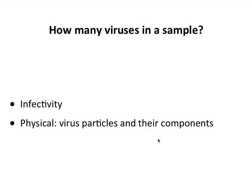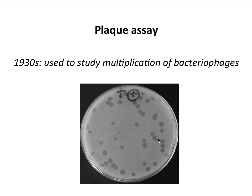Starting with infectivity, the plaque assay is in my view the most important way of measuring viral infectivity. This slide shows a photograph of a plate showing individual plaques. It was first developed in the 1930s by virologists studying bacteriophages—viruses that infect bacteria. In this photograph we see an agar plate with a lawn of bacteria; wherever a bacterium has been infected, those bacteria made additional viruses which spread and formed a zone of killing—each clear area is a plaque.